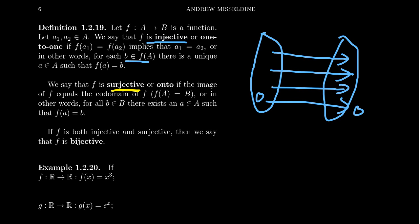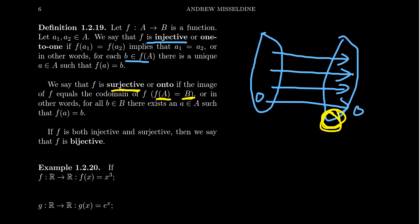We say that a function is surjective — or the term you might have heard before is onto. We say that a function is surjective if every element in the codomain is mapped onto by something in the domain. That is, for every element B in the codomain, there's at least some element A that maps onto it — hence why we call this an onto function. Another way of saying this: a map is surjective if its image is equal to its codomain. That means nothing in the codomain is missed by the function mapping things from the domain.